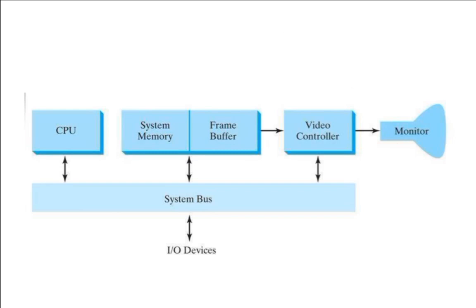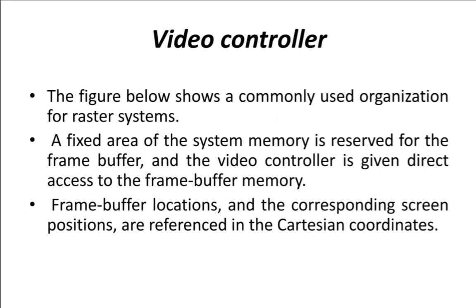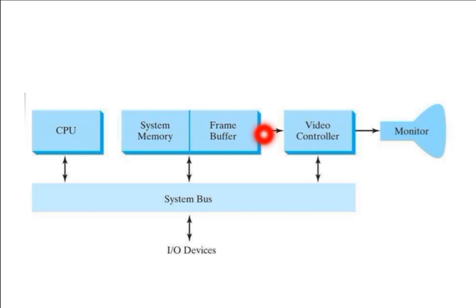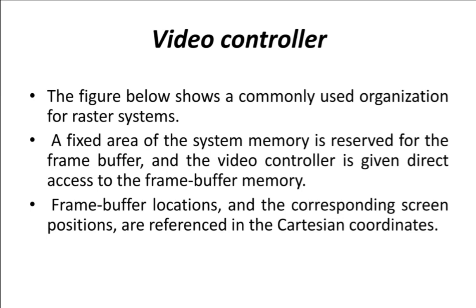This diagram shows the actual organization of the video controller. The figure shows a commonly used organization for a raster system. First, a fixed area of the system memory is reserved for the frame buffer, and the video controller is given direct access to the frame buffer memory. The pixel details stored in the frame buffer can be accessed by the video controller.